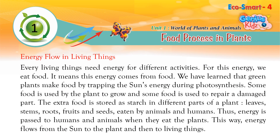Every living thing needs energy for different activities, and this energy comes from food. Green plants make food by trapping the sun's energy during photosynthesis. Some food is used by the plant to grow and repair damaged parts. The extra food is stored as starch in different parts of the plant — leaves, stems, roots, fruits and seeds — and is eaten by animals and humans. Thus, energy is passed to humans and animals when they eat plants. Energy flows from the sun to the plant and then to all living things.